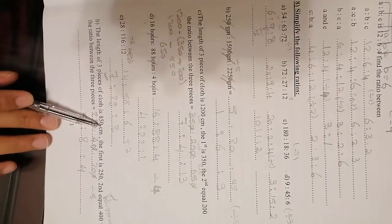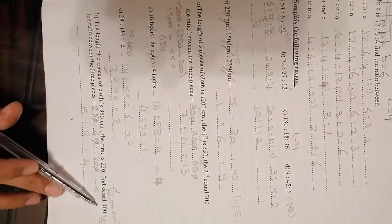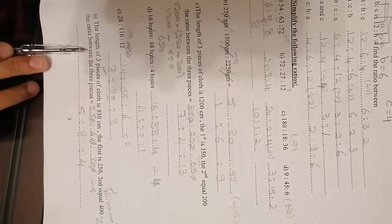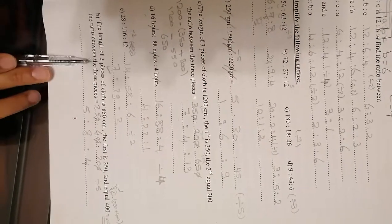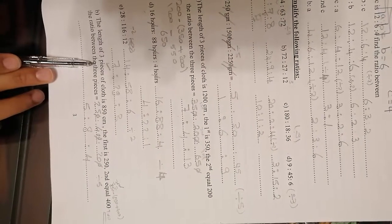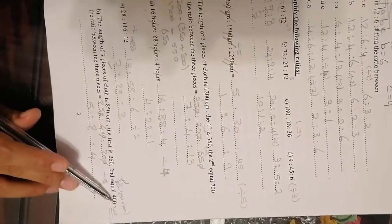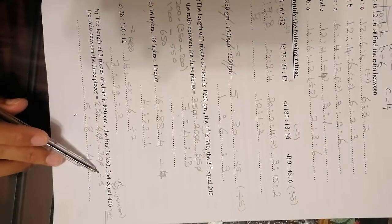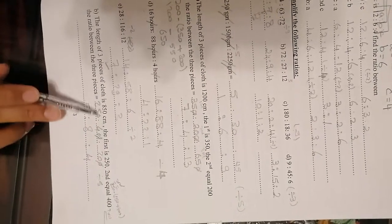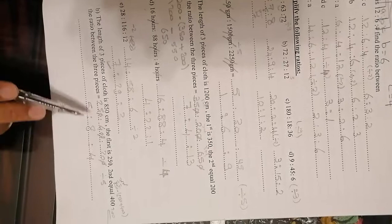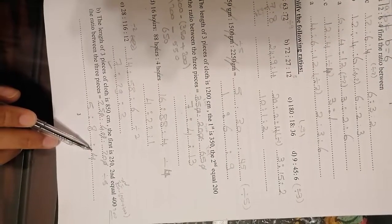Here, the length of three pieces of cloth is 850. The first is 250, the second is 400. I want to bring the ratio between the three pieces. So, first of all, I must bring the third one. The total minus the first plus the second. The total will be 200. Then you are going to put the three numbers. And all of them are divisible by 5. Divide by 5. And this will be the answer.